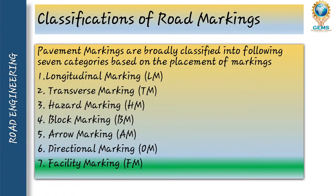Next is the classification of road marking. Pavement markings are broadly classified into seven categories based on placement: first, longitudinal marking; second, transverse marking; third, hazardous marking; fourth, block marking; fifth, arrow marking; sixth, directional marking; seventh, facility marking. Let us discuss these markings for a clear understanding.